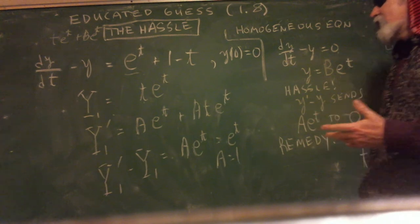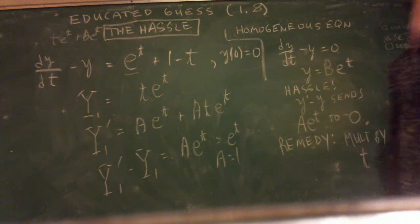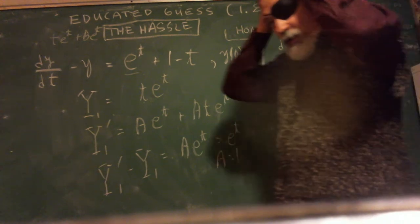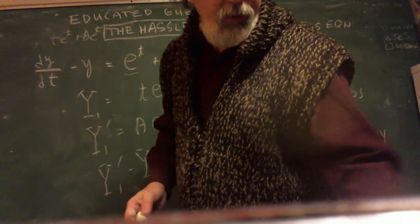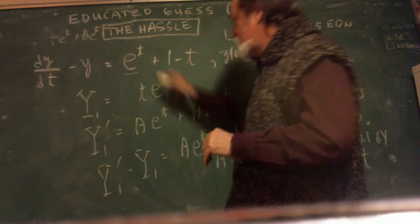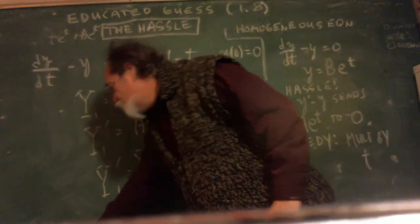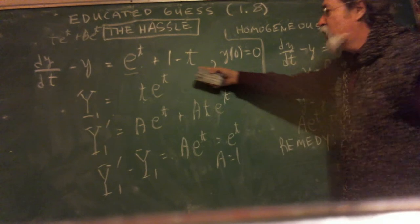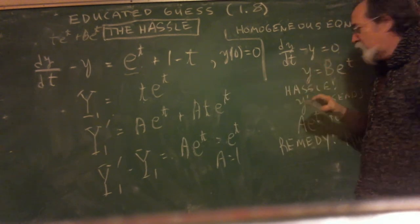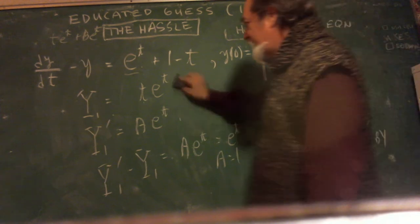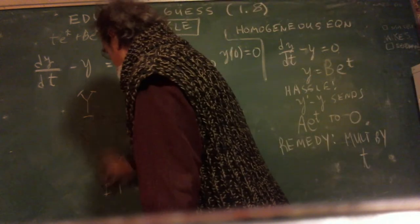Well, I think this is the moment. I can get rid of the pirate gear. Because we are now going to do just a regular old educated guess. Because we took care of the nasty part. And I don't have a hassle with the 1 minus t. Because the homogeneous solution is not a polynomial solution.